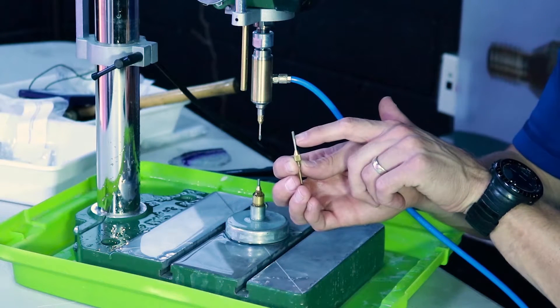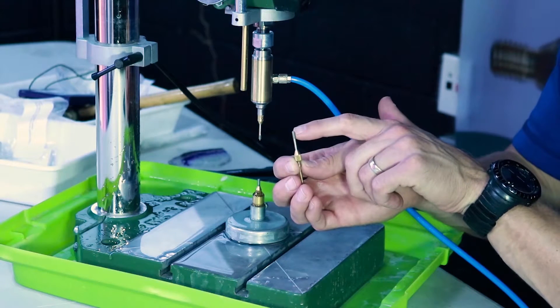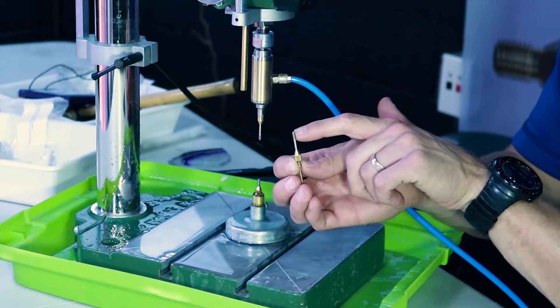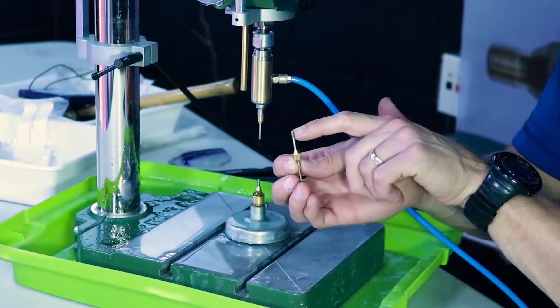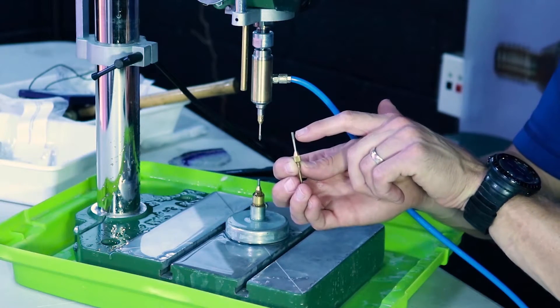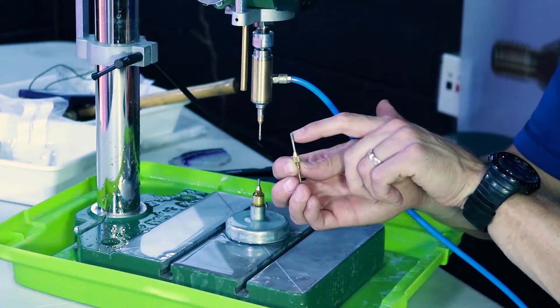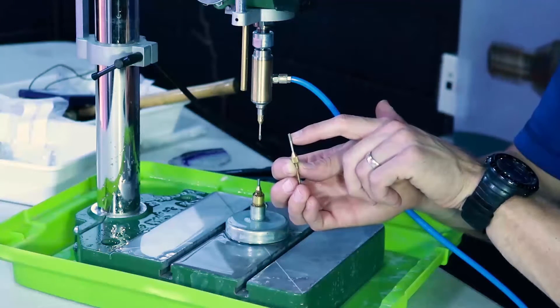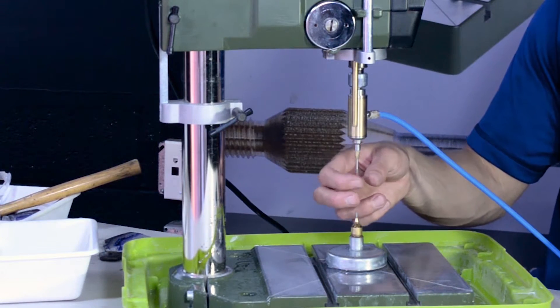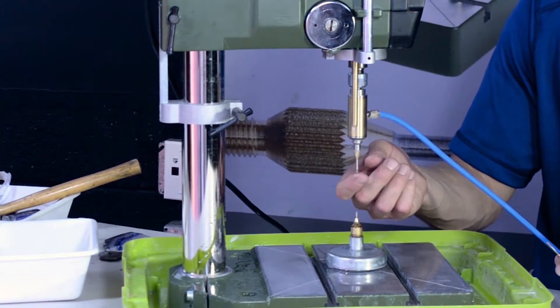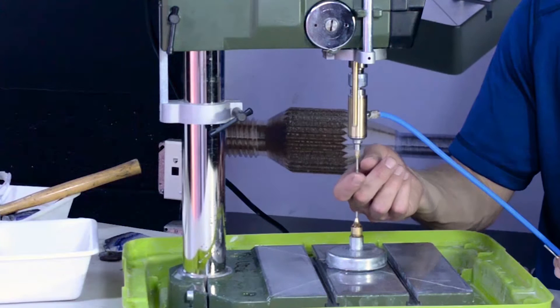As you drill, this diamond matrix is consumed over time and gets shorter and shorter. This is an older drill bit I have here. What doesn't get consumed is the ejector needle, so it sticks out.